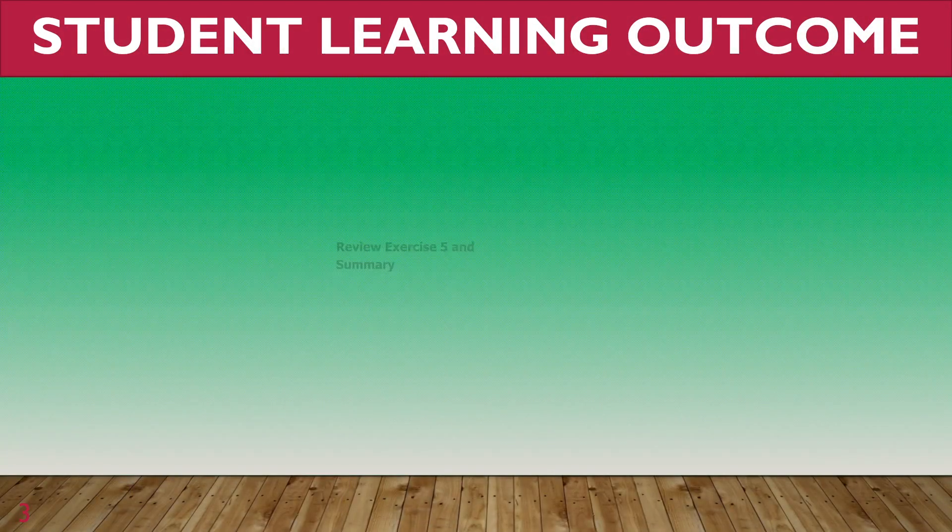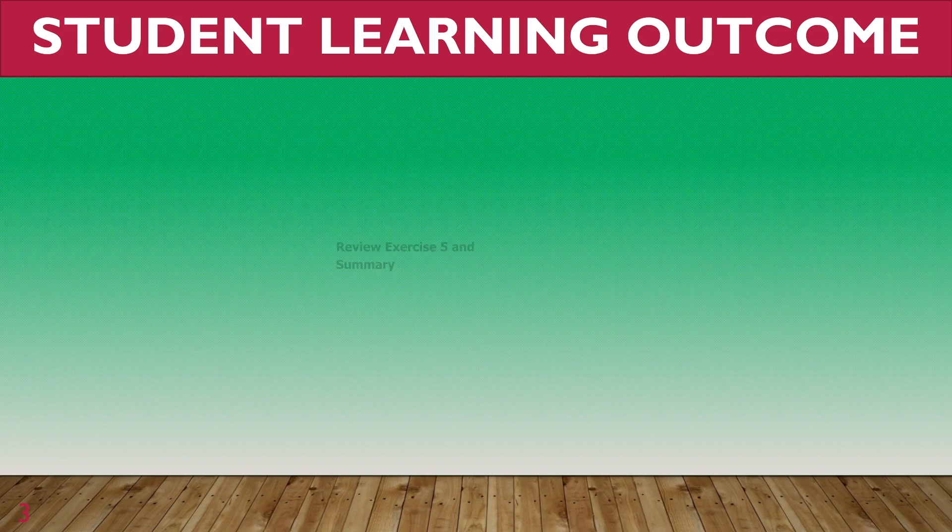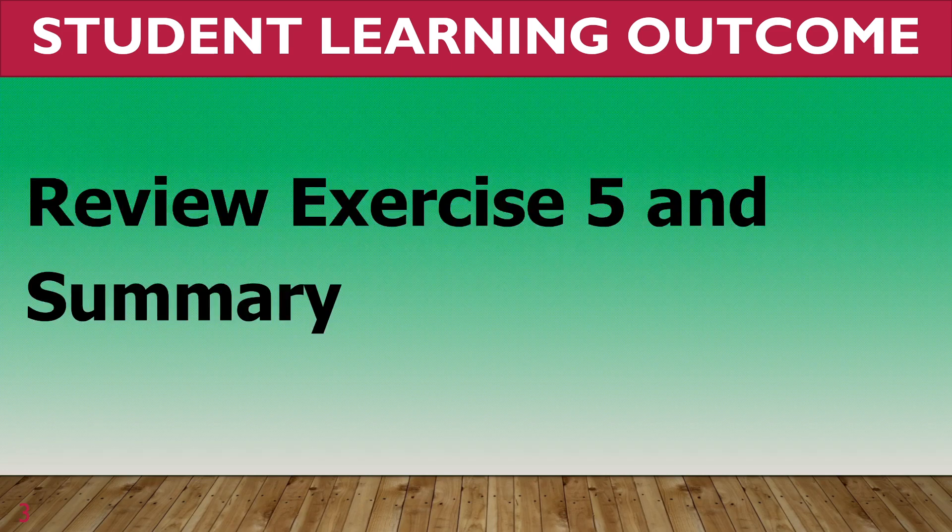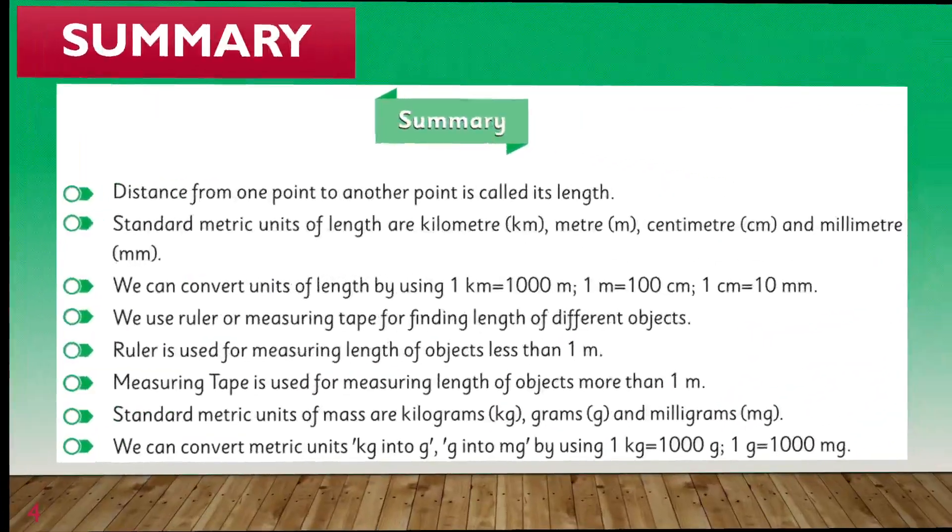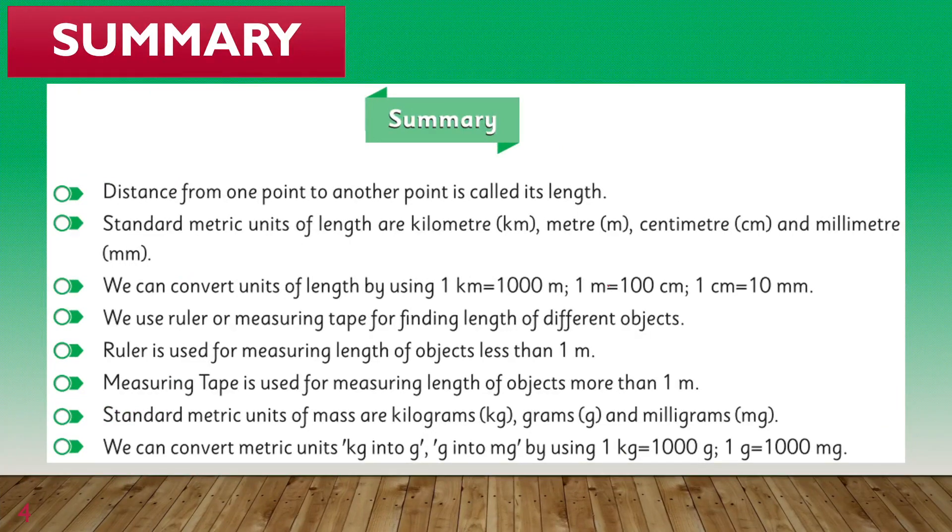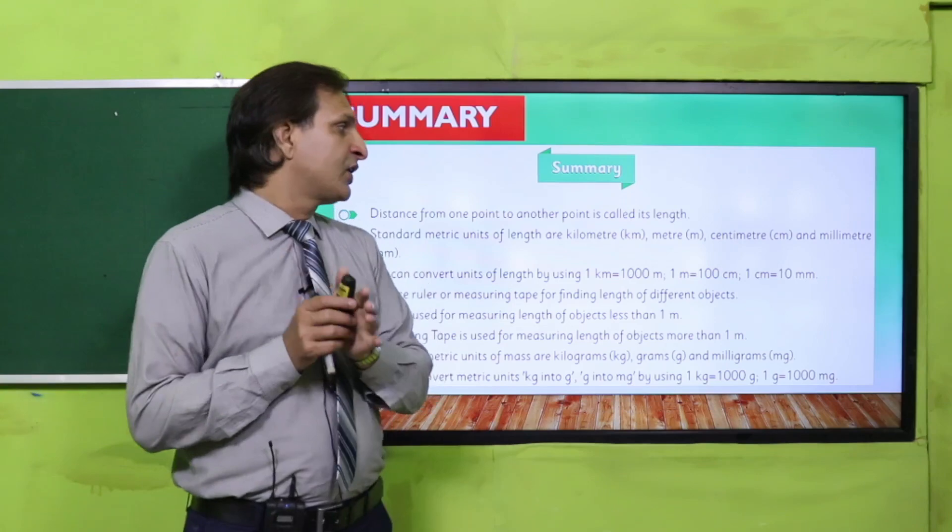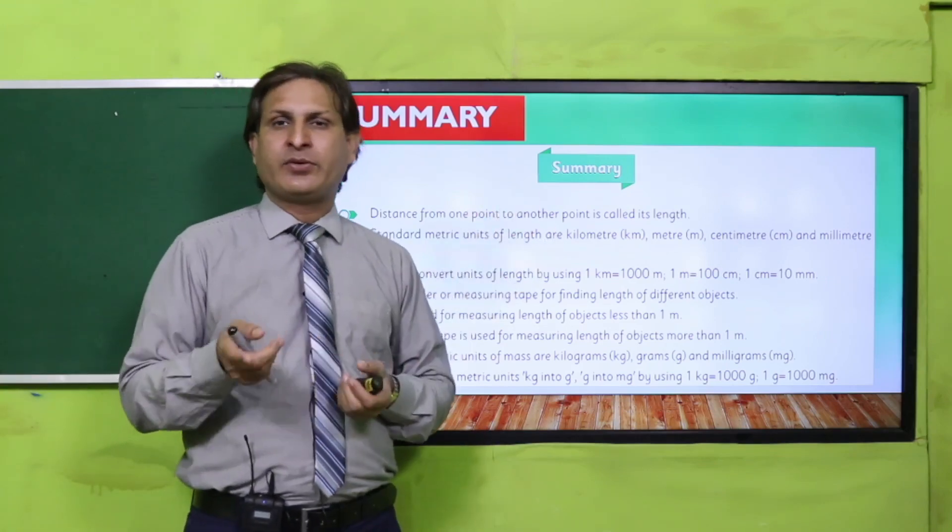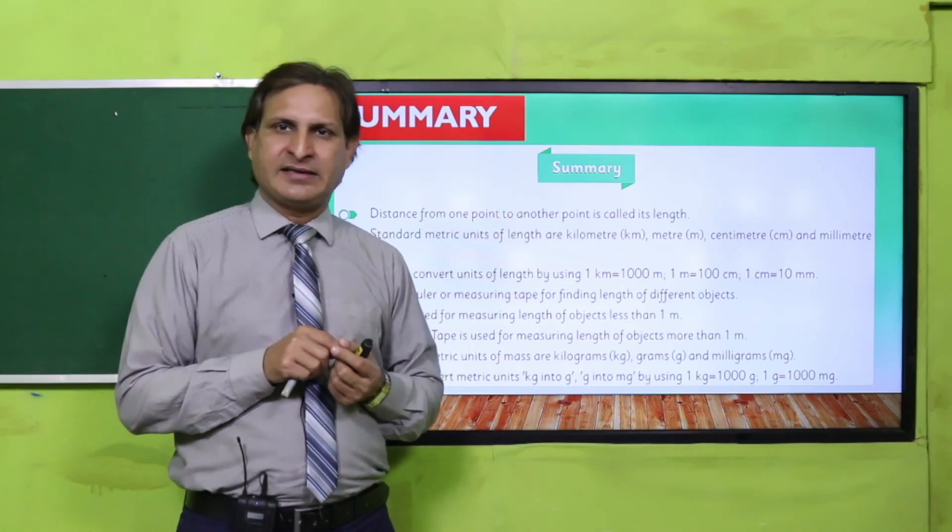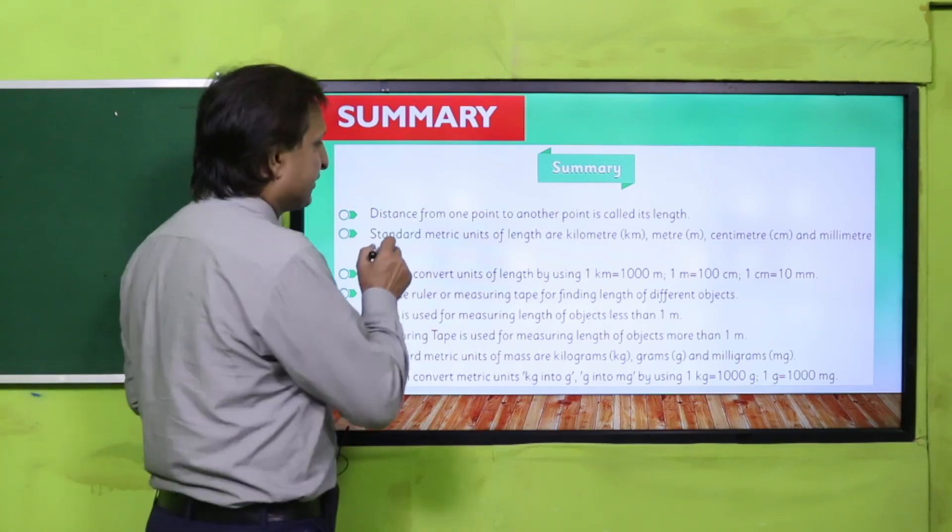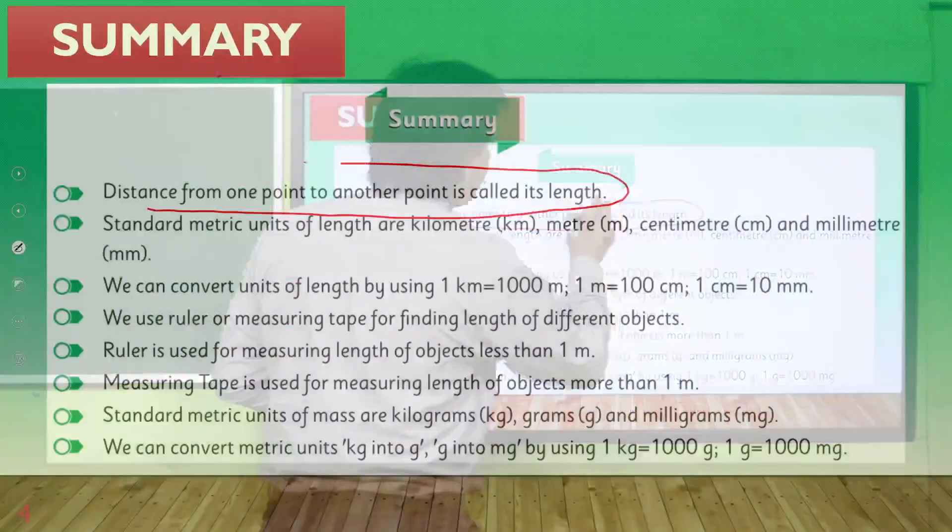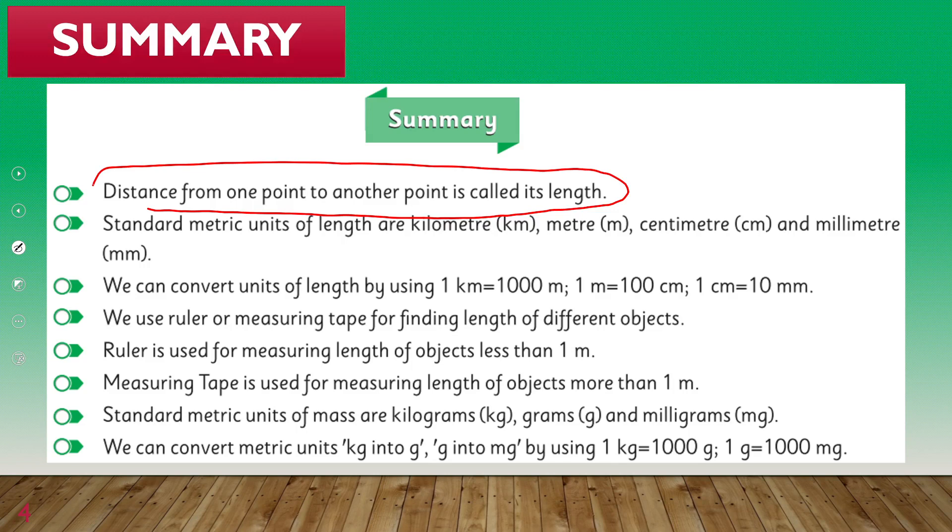Then I have summary. In the summary, there are all the definitions and key concepts that we discussed in unit 5, such as distance from one point to another point is called length. Similarly, standard metric units of length are kilometers, meters, centimeters, and millimeters.